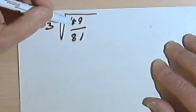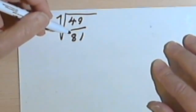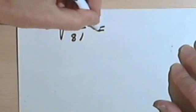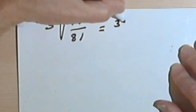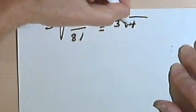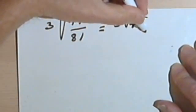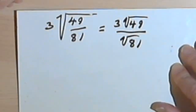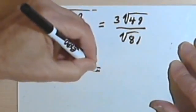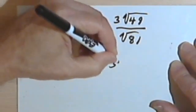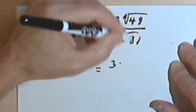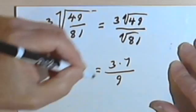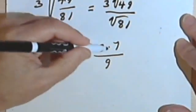49 is a perfect square, and 81 is a perfect square. So it's going to make sense to break this down into two radicals. That means I'm going to have 3 times the square root of 49, and that's going to be over the square root of 81. So taking the square roots, I'll have 3 times the square root of 49 is 7. The square root of 81 is 9.